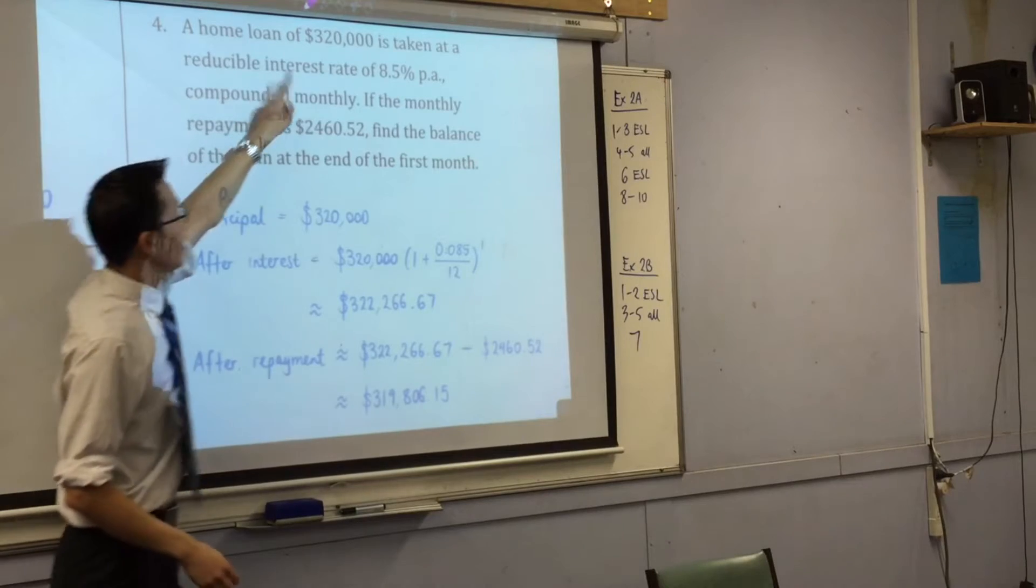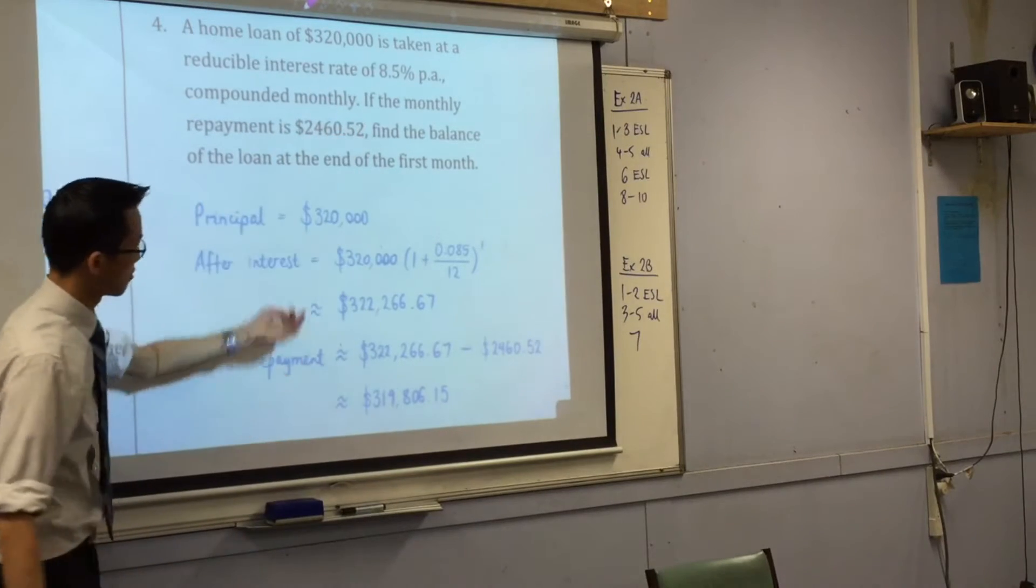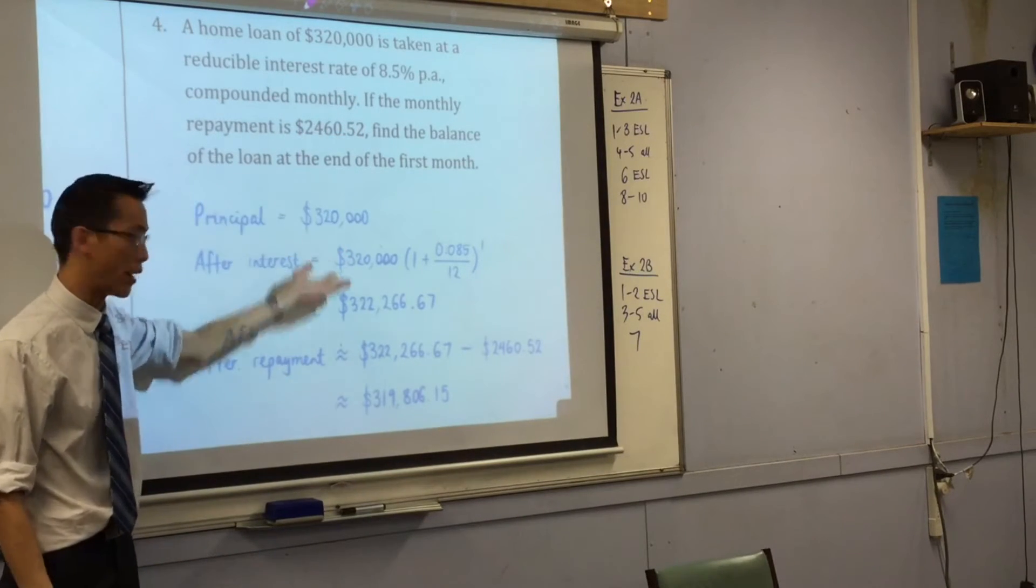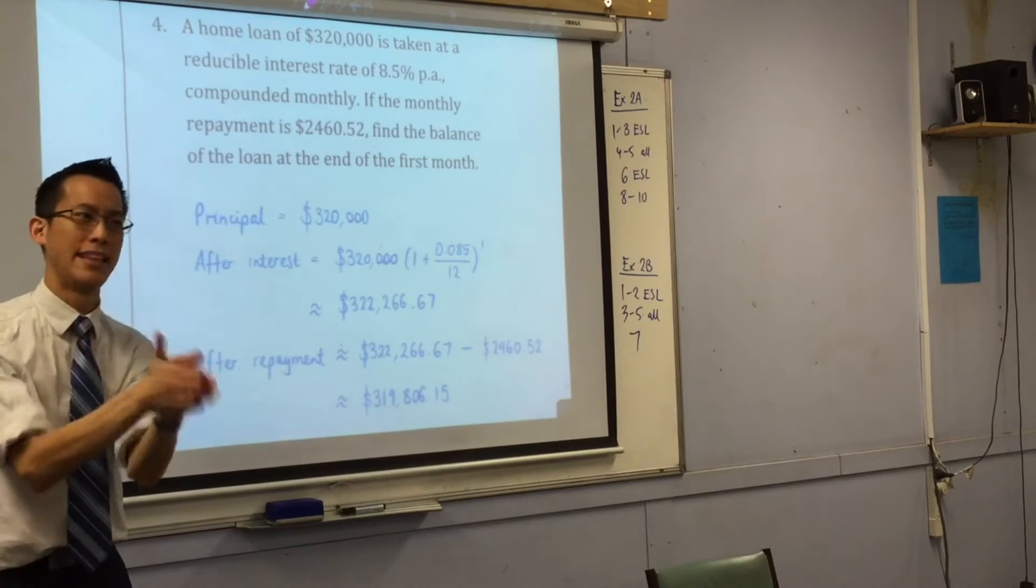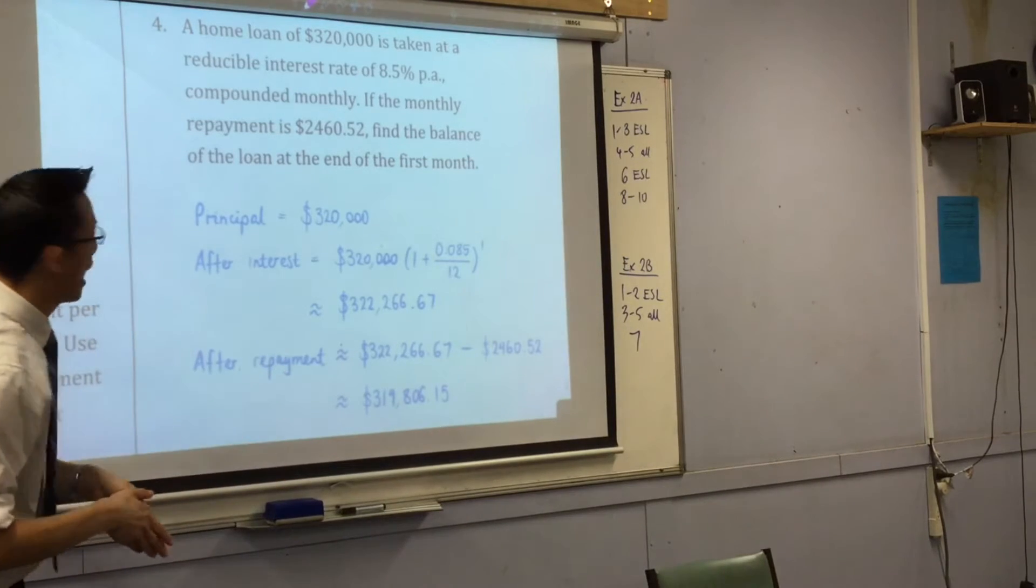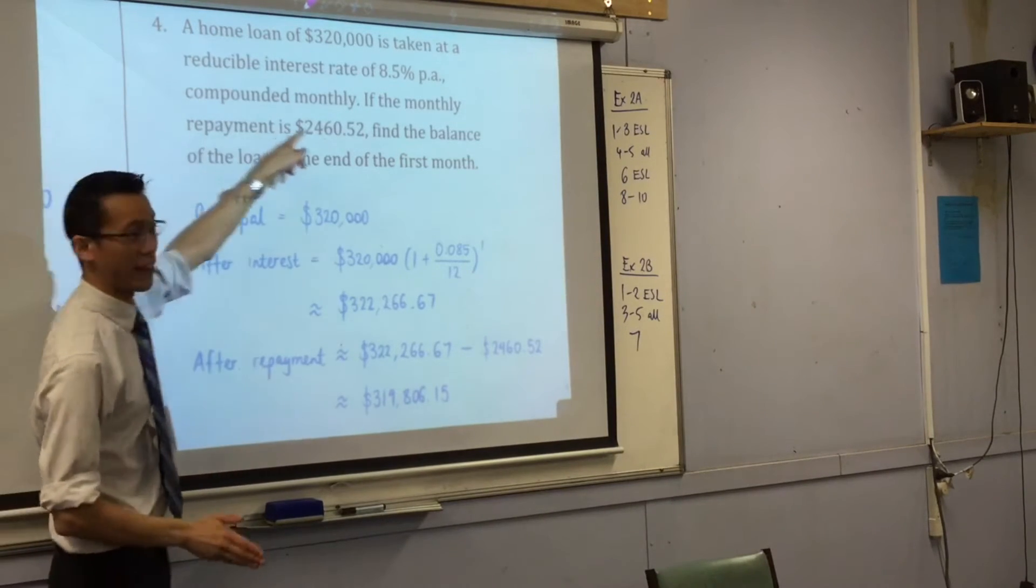And you can see from there that there are two basic things happening. There is an interest rate that gets charged. That means that the principle that you're owing, it's going to get bigger and bigger and bigger unless you do something about it. And the something that you're going to do is this monthly repayment.